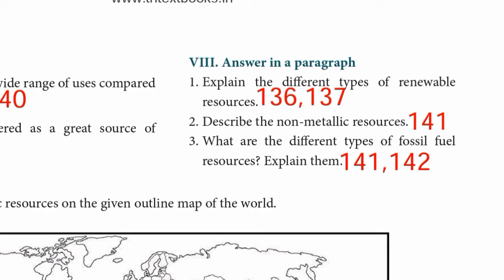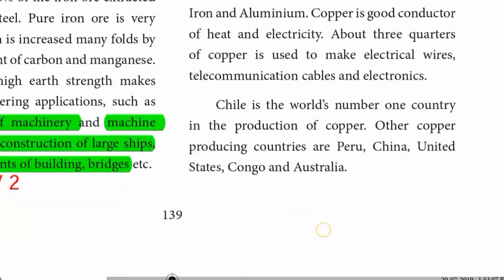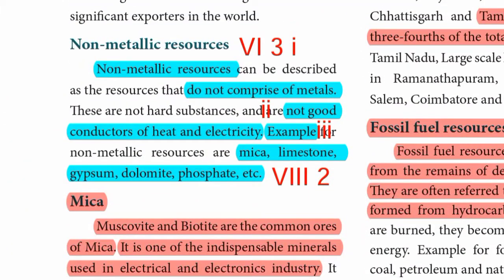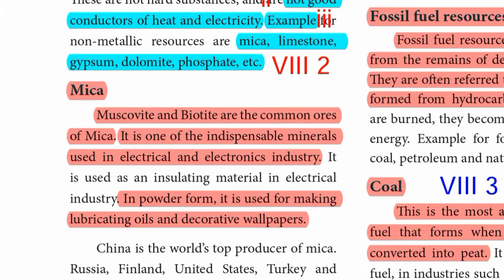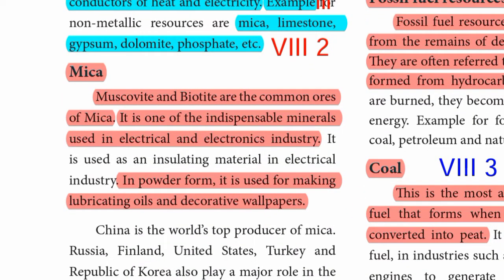Second question: Describe the non-metallic resources. Page number 141. Non-metallic resources do not comprise of metals and are not good conductors of heat and electricity. Example: Mica. Muscovite and biotite are the common ores of mica. It is one of the indispensable minerals used in the electrical and electronics industry. In powder form, it is used for making lubricating oils and decorative wallpapers.